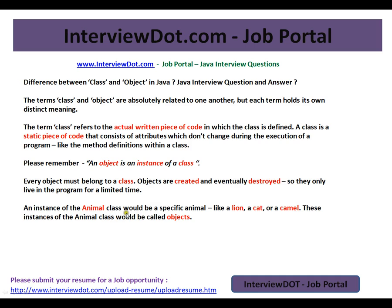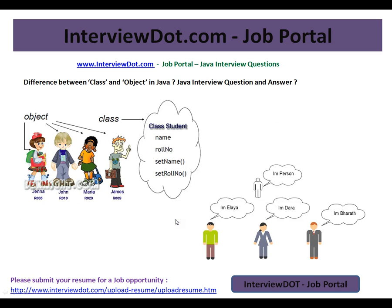For example, an instance of the animal class would be a specific animal like lion, cat, or camel. So here, animal is just a concept, whereas lion, cat, and camel are the real instances of the animal class. These instances of the animal class would be called objects.